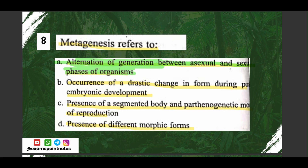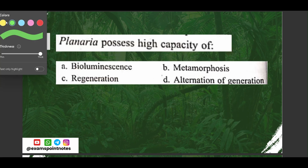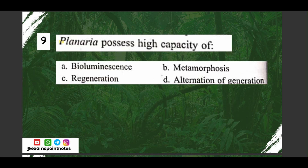Question number nine: Planaria possesses a high capacity of — options are: A) bioluminescence, B) metamorphosis, C) regeneration, D) alternation of generation. The correct answer is option C, regeneration.